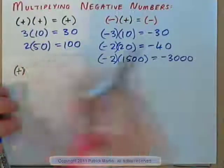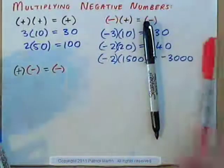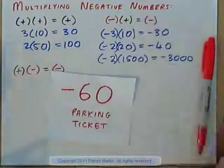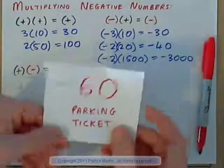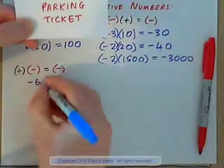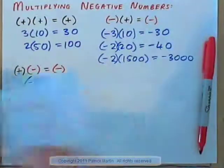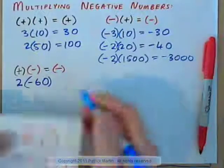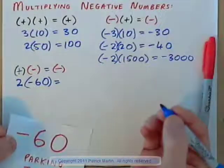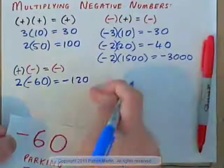So negative times positive is negative, and we're all usually okay with that. How about this one? Positive times negative gives a negative. And why is that? Well, you could have a parking ticket for $60 — that's a negative, that's a real negative thing. So let's write that down: that's our negative 60. If you had two of these, you could write: two times negative 60. Two parking tickets of $60 each — that's like having negative $120, being in debt by $120.